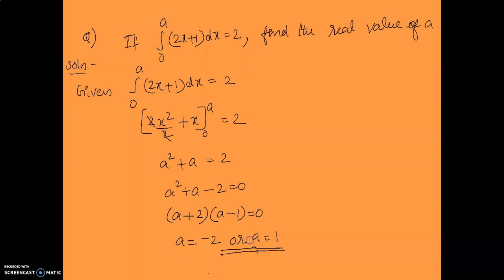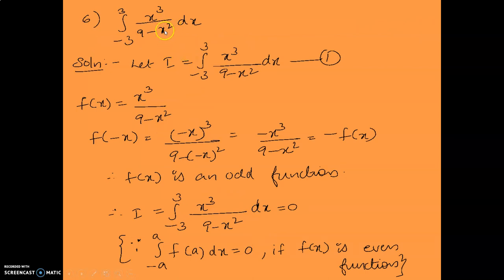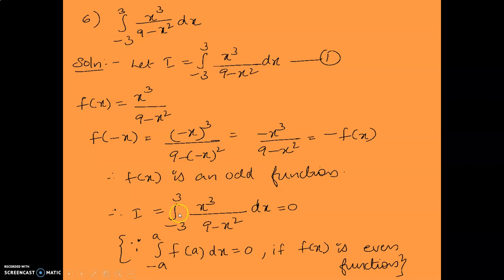Next question is integral minus 3 to 3 of x cube upon (9 minus x square) dx. This is of the form integral minus a to a of f(x) dx, so we apply the even and odd function property. f(x) equals x cube upon (9 minus x square). f(minus x) equals minus x cube upon (9 minus x square), which equals minus f(x). So the given function is an odd function, and therefore i equals 0.